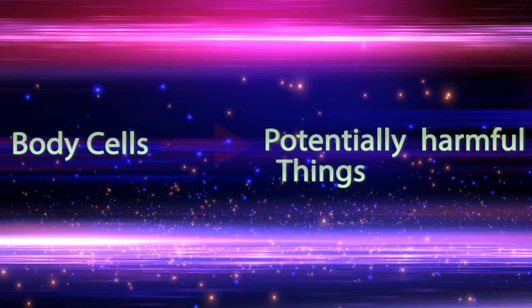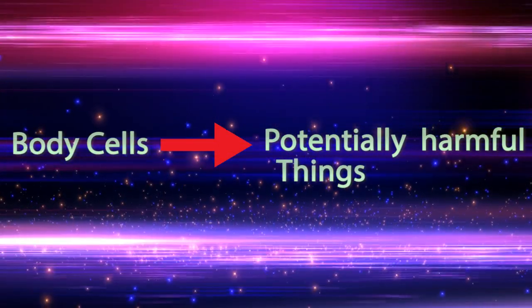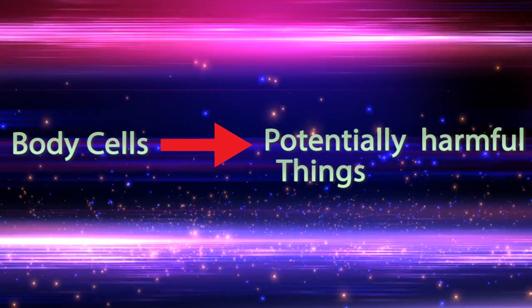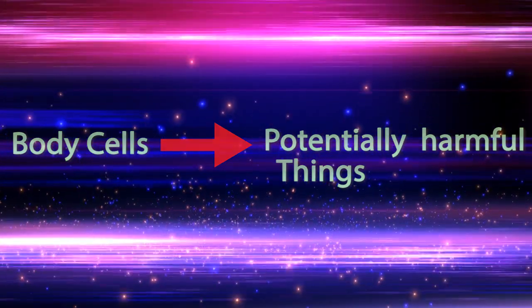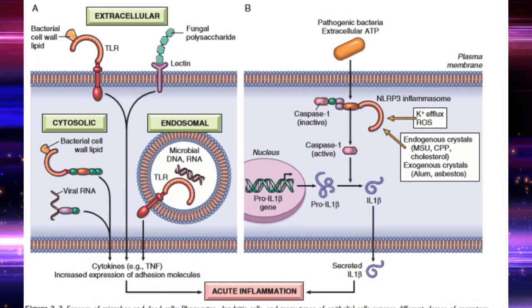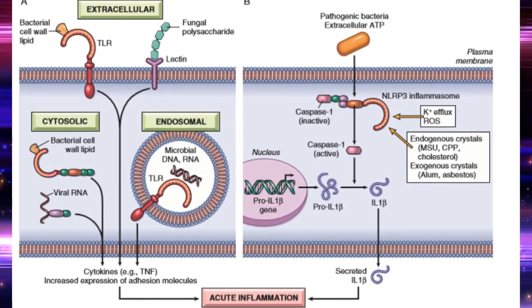Everything begins with our body cells recognizing potentially harmful things. For that they use two main receptors: Toll-like receptors and inflammasomes.